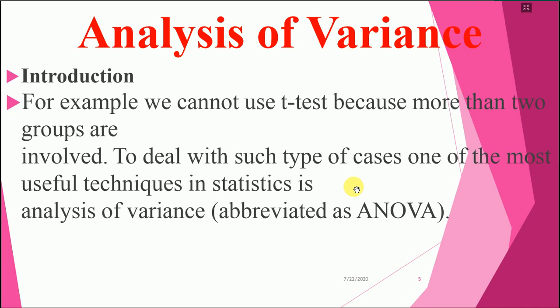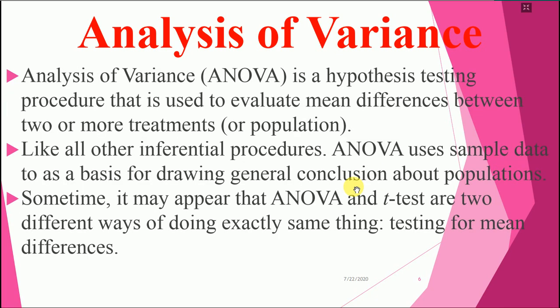We cannot use a t-test when more than two groups are involved. To deal with such cases, one of the most useful techniques in statistics is Analysis of Variance, abbreviated as ANOVA. ANOVA is a hypothesis testing procedure that is used to evaluate mean differences between two or more treatments.